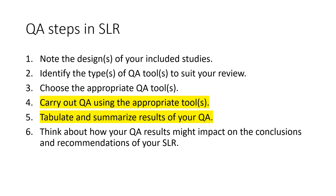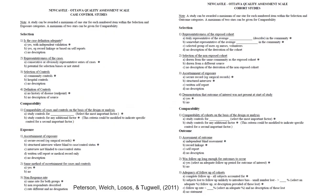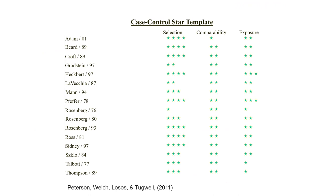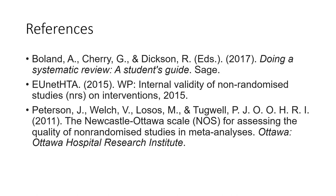The next steps are to execute the quality assessment using the selected QA tool, then tabulate and summarize the results. A QA tool contains different questions about bias — for each study, you grade or check against these questions and produce results. You then tabulate and summarize these results into a comparison table, which helps you compare the quality across studies.